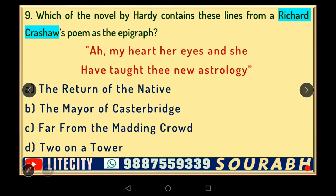Our next question: which Hardy novel contains these lines from Richard Crashaw's poem as the epigraph — 'Ah my heart, her eyes and she have taught thee new astrology; here the key lies'? The key context is that the protagonist of this novel is an astronomer. The options are 'The Return of the Native,' 'The Mayor of Casterbridge,' 'Far from the Madding Crowd,' or 'Two on a Tower.' The answer is 'Two on a Tower,' where the protagonist is an astronomer who falls in love — a typical Hardy story.